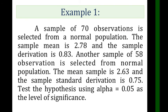A sample of 70 observations is selected from a normal population. The sample mean is 2.78 and the standard deviation is 0.83. Another sample of 58 observations is selected from a normal population. The mean sample is 2.63 with a standard deviation of 0.75. Test the hypothesis using alpha equals 0.05 as the level of significance.